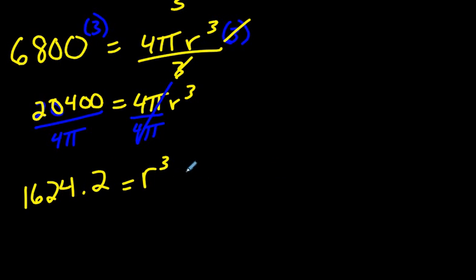The very last step that we need to do here is take the cube root of both sides because there's cubing going on here, there's the exponent 3. The opposite of that is the cube root.